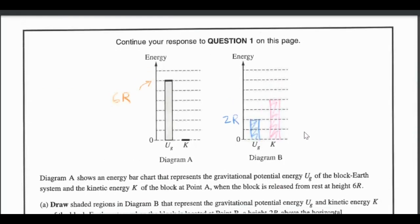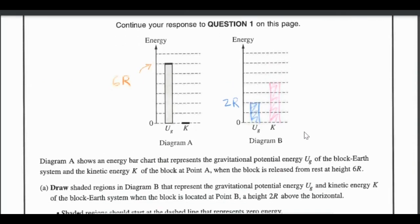Now with that being said, here is our first question. It's asking us to draw in diagram B, coloring in the amount of gravitational potential energy and the amount of kinetic energy. When I took a look at my first bar graph I noticed that it went up 1, 2, 3, 4, 5, 6 dashes up the chart so it was 6R height, which means that each little dotted line would be representative of a single radius.